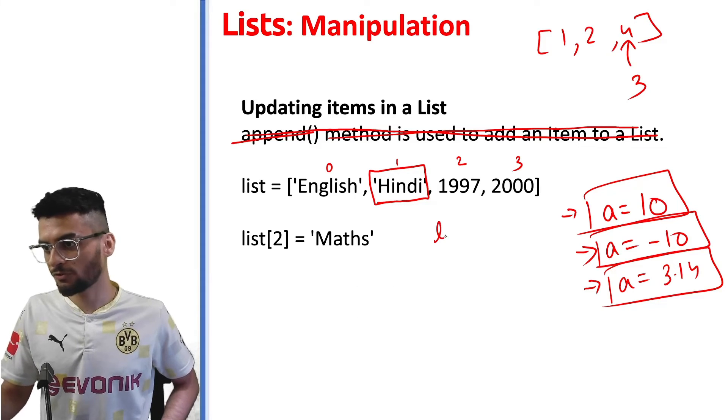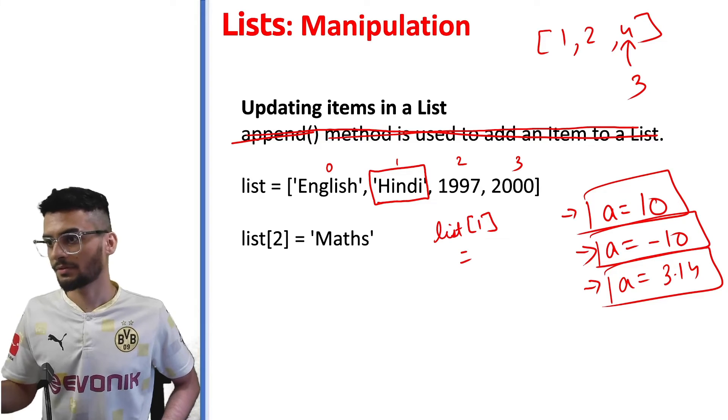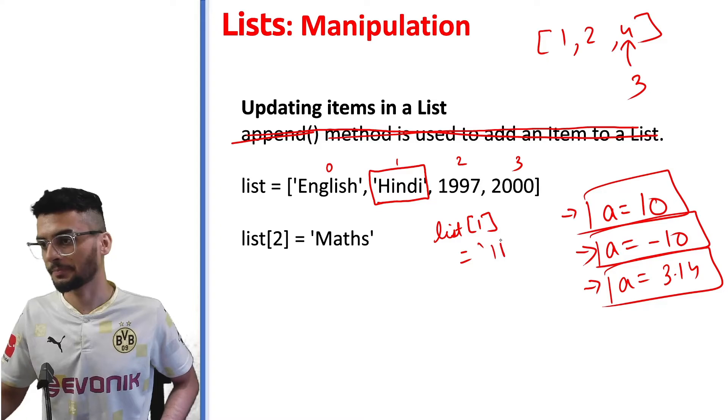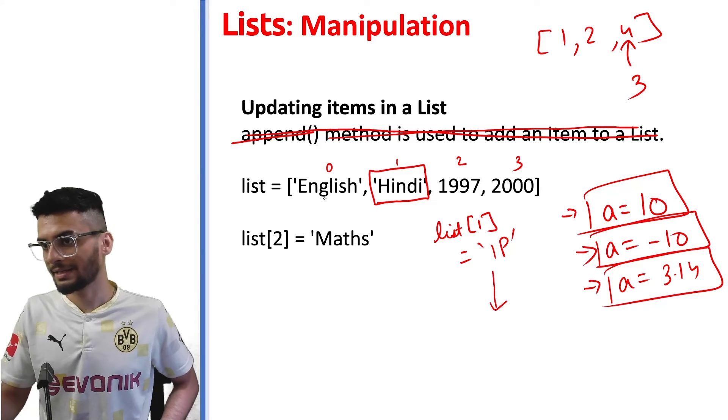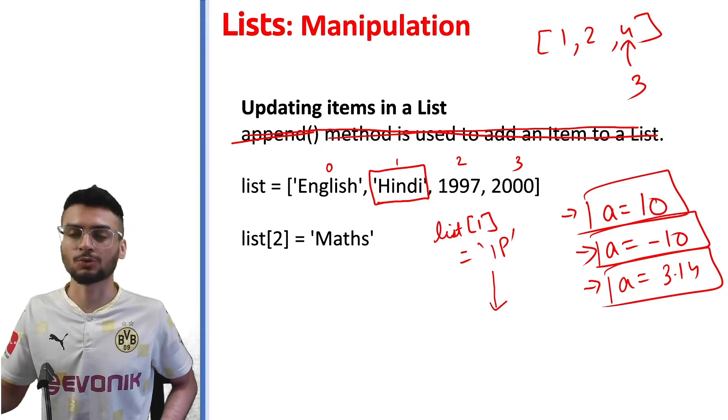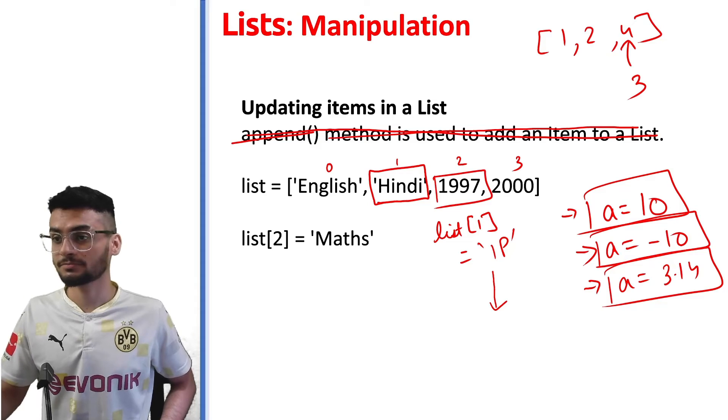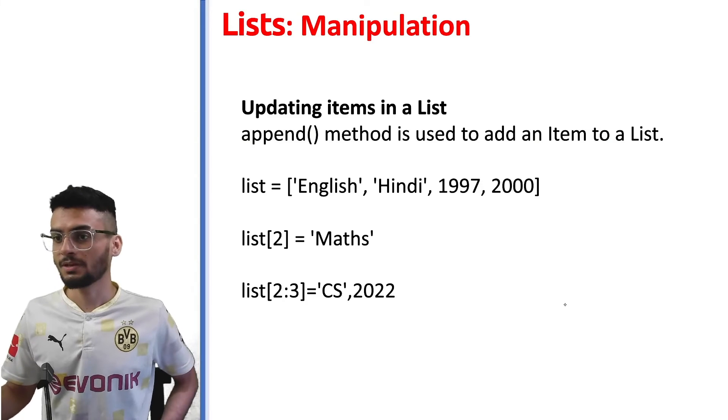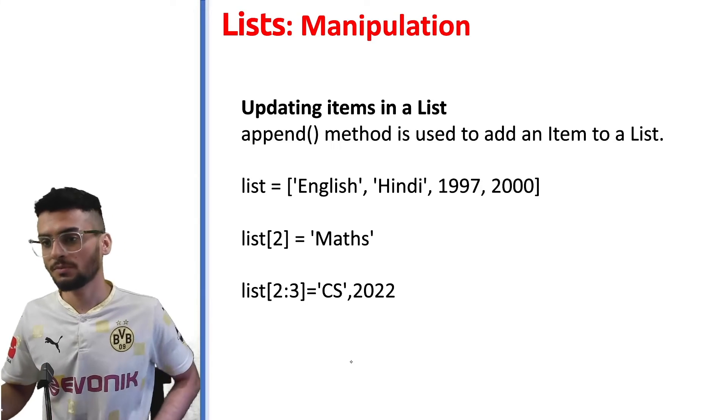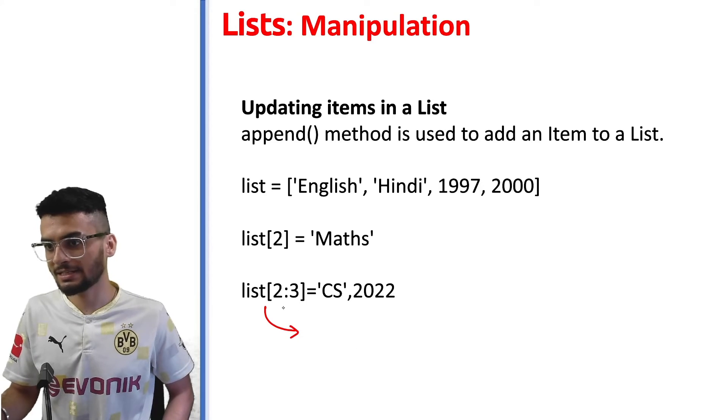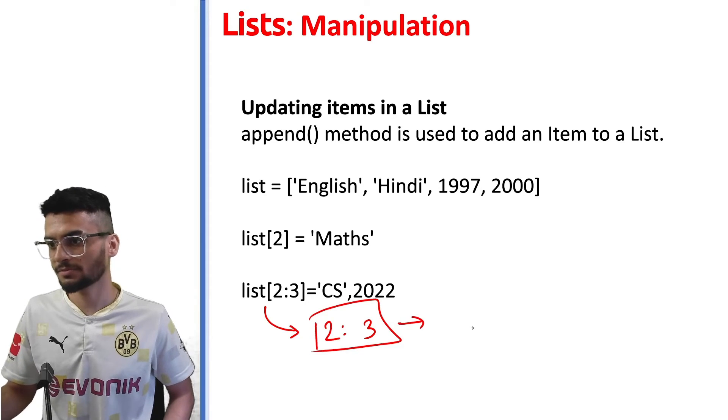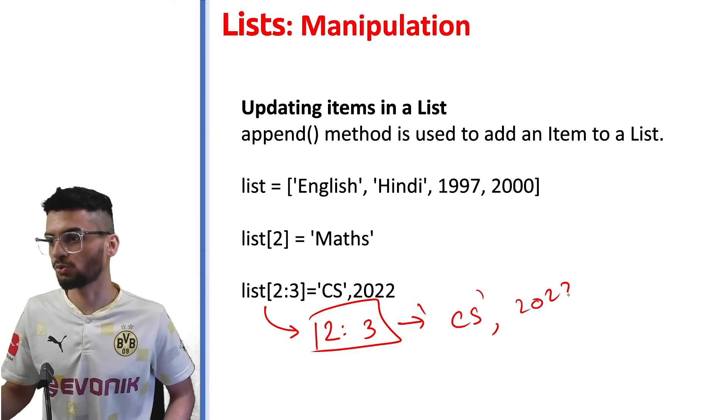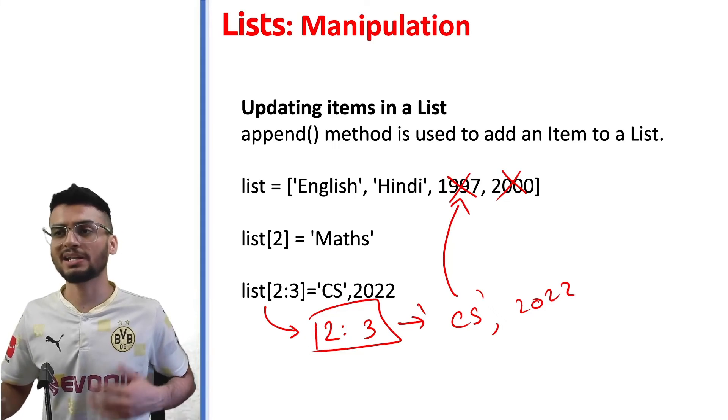For example, I want to update this element to a new element. So for that we would write list at one and I can change it to anything else, like IP. Your final list would look like English, IP, 1997, and 2000. Similarly, you can also change the second element or element at position 2 to Maths. There is another way to change multiple elements in one go. So this actually means that the list element from 2 to 3 will change. So it becomes CS and 2022. Basically these two will go away and this will be joined here. So this is how you can update elements in a list.